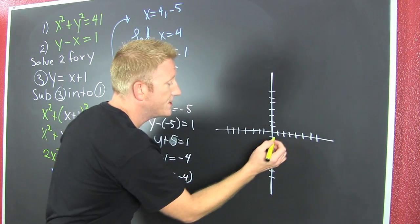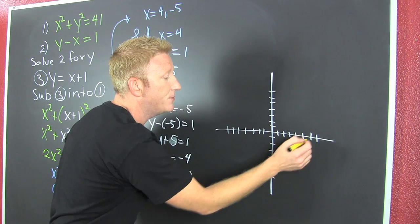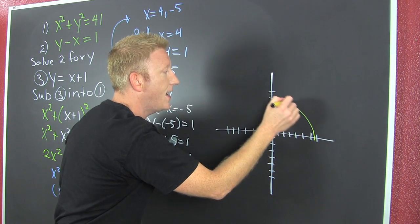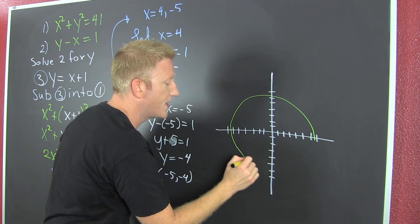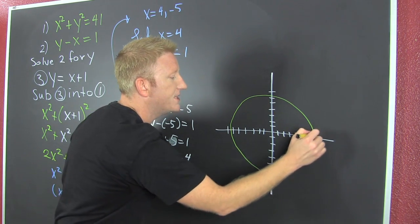That top one is a circle centered at the origin whose radius is in between 6 and 7. I know that's not a perfect circle, but this is a sketch.